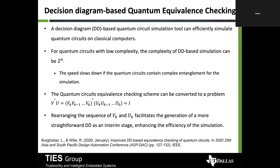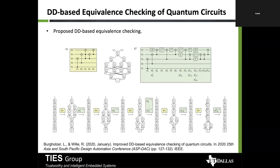Decision diagram-based quantum circuit simulation can efficiently verify a quantum circuit using the same notion: take the transpose, invert one circuit, multiply with the other, and if the output is an identity you know the two circuits are equivalent. To illustrate: we have two circuits G and G', both with five qubits. G comprises five quantum gates while G' comprises 19 quantum gates. A naked-eye inspection cannot determine equivalence — we need algorithmic equivalence checking.